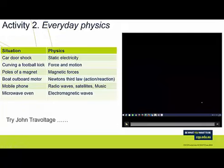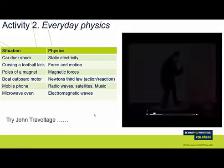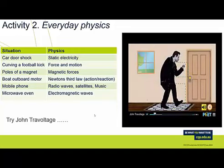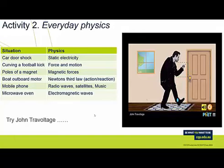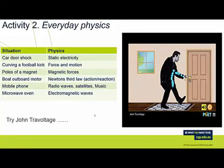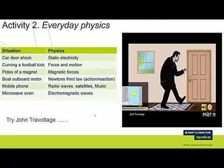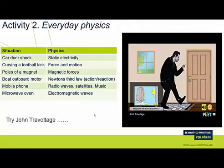John Travoltage is a little example where students can explore ideas about static electricity — in particular, what happens when you touch a doorknob and feel, or even see, a spark. We can rub John Travoltage's foot against the rug, resulting in excess electrons on his body, and he can then get a spark by bringing his hand close to the doorknob. You can use the companion simulation, Balloons and Static Electricity, to compare this behaviour to that of a charged insulator.